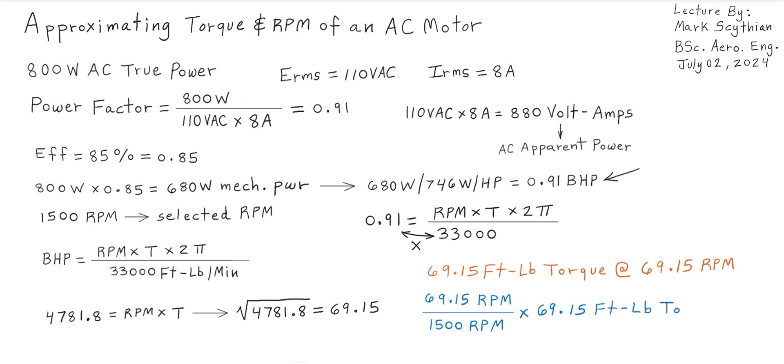That's a reducing ratio with a multiplying factor of 0.0461 times 69.15 foot-pounds torque. This computes the foot-pounds torque output at 1500 RPM equals 3.2 foot-pounds torque.